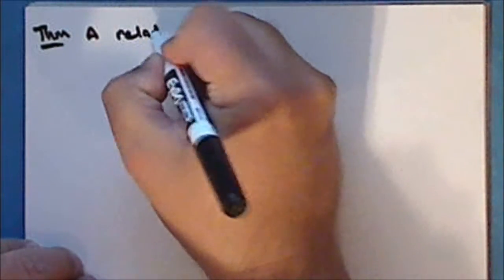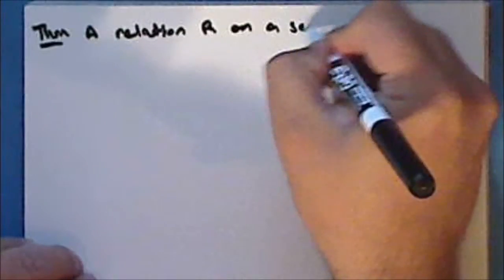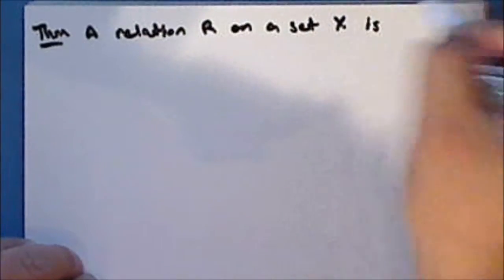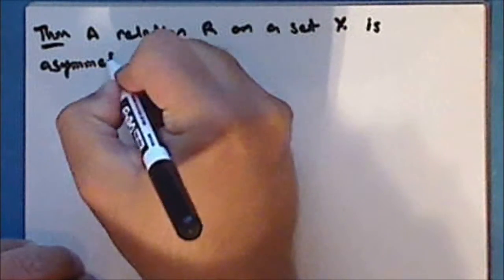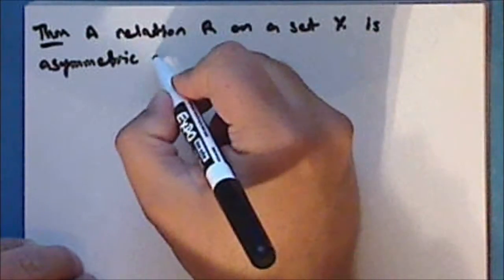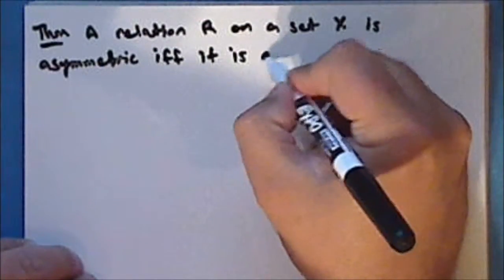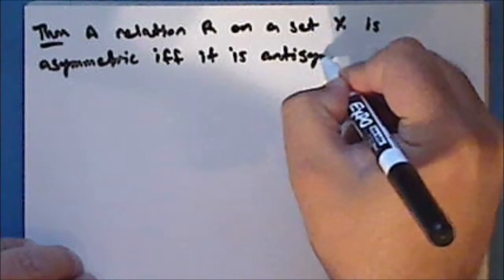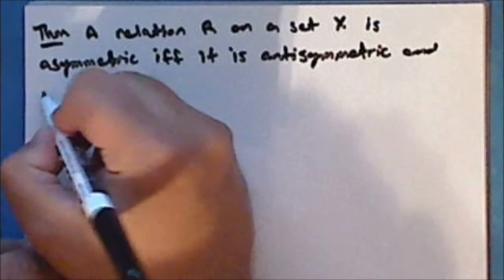Next we'll prove a theorem. A relation R on a set X is asymmetric if and only if it is antisymmetric and irreflexive.